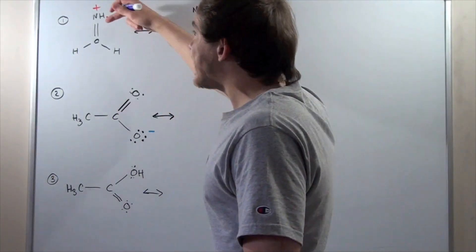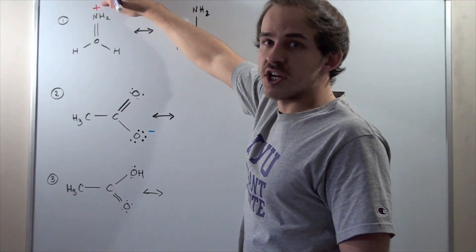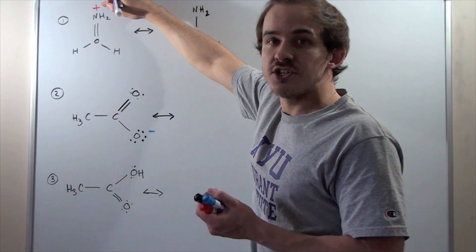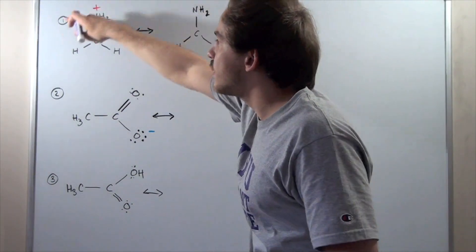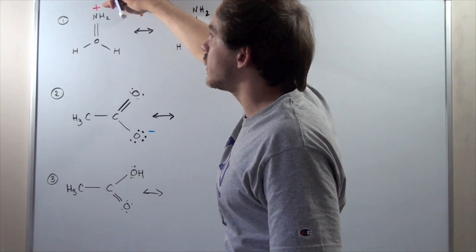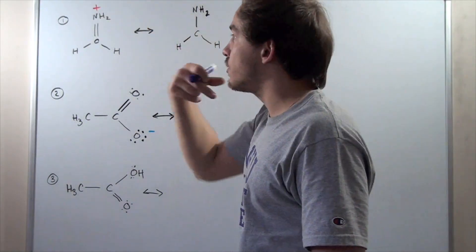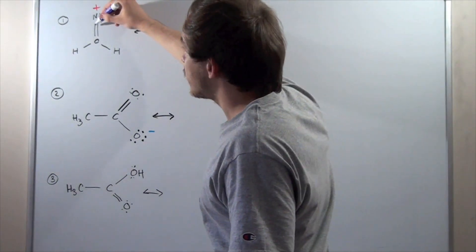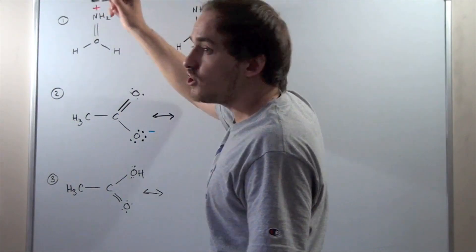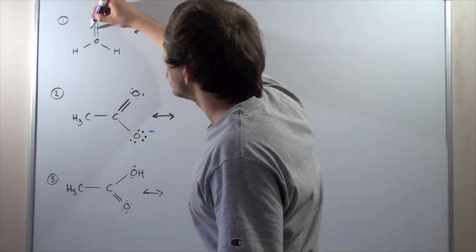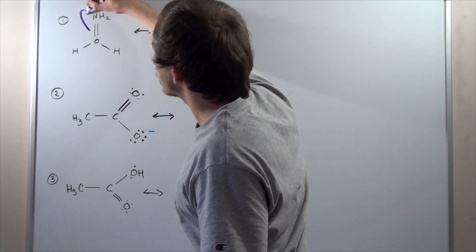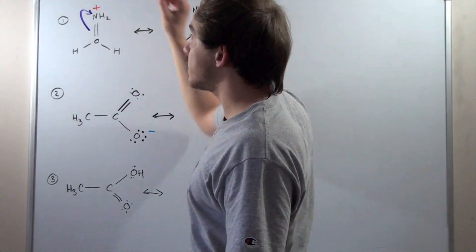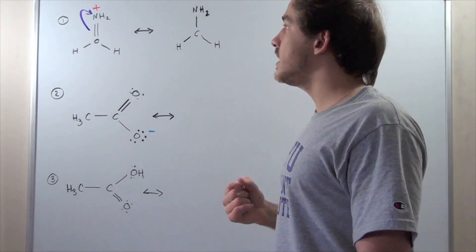What can we do here? Look at this plus charge here — we don't like having charges. Charges mean destabilization. We want to stabilize this Lewis dot structure by removing this plus one charge. We can do that by taking this double bond — these two electrons, a pair of electrons — and using arrow formalism to move these electrons. A double-headed arrow simply means that a pair of electrons is being moved.